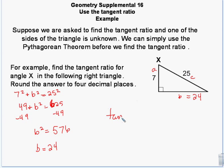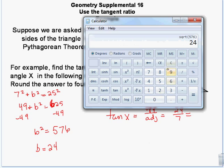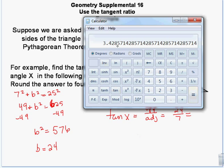Now that b is 24, I can find the tangent of X, which is opposite over adjacent: 24 over 7, which equals 3.4286.